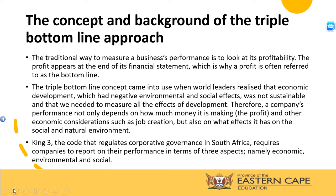King 3 is the code that regulates cooperative governance in South Africa. King 3 requires companies to report on their performance in terms of three aspects: economic, environmental, and social. So when any company or business in South Africa reports on their performance, they do so not only in terms of the economic pillar, but also in terms of the environmental and social pillars.